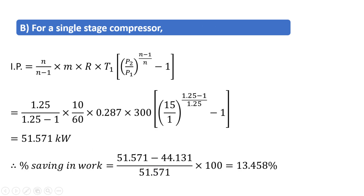For single-stage compression, the indicated power is given by: (n / n−1) × ṁRT₁ × [(P2/P1)^((n−1)/n) − 1]. Substituting n = 1.25, mass flow rate = 10/60, R = 0.287, T1 = 300 K, and delivery pressure P2 = 15 bar, the single-stage power comes out to be 51.571 kW. As you can see, the single-stage compression requires more work than the two-stage compressor, which is why multi-stage compression is preferred.